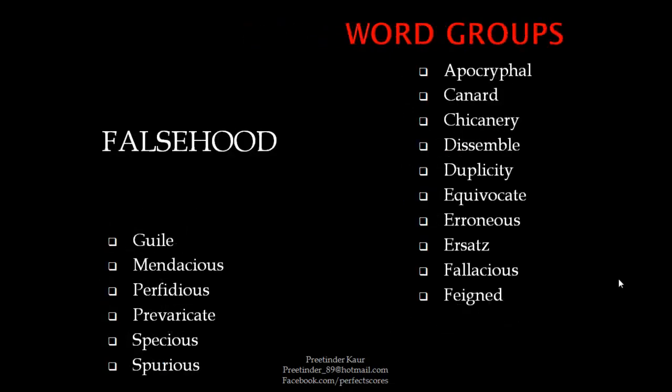The next word group is for falsehood. You have words like guile, mendacious, perfidious, prevaricate, specious, spurious, apocryphal, canard, chicanery, dissemble, duplicity, equivocate, erroneous, ersatz, fallacious, and feint. All these words mean that something is not correct — it's deceitful or it's false.